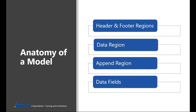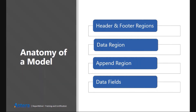Here is the anatomy of our report model. In the report model, we define the area from which you are going to extract data as a region. There are four basic types of regions: the header region, footer region, the main data region, and the append region. Once you have defined the regions, the exact data points you want to capture are called data fields, or simply fields, in Report Miner.